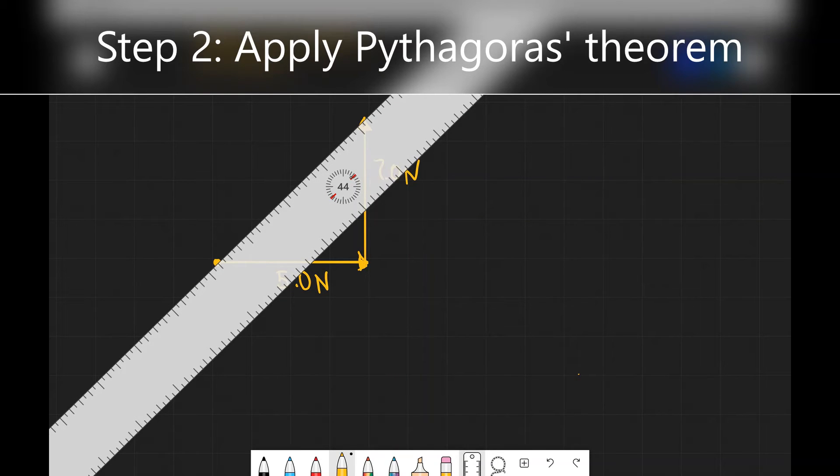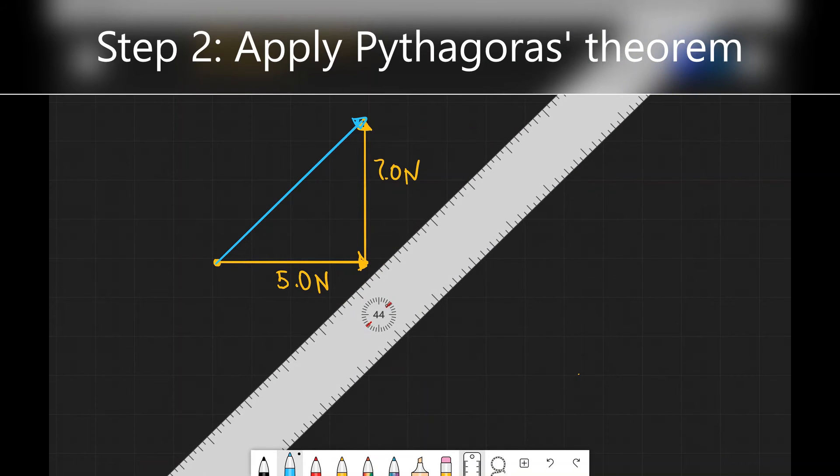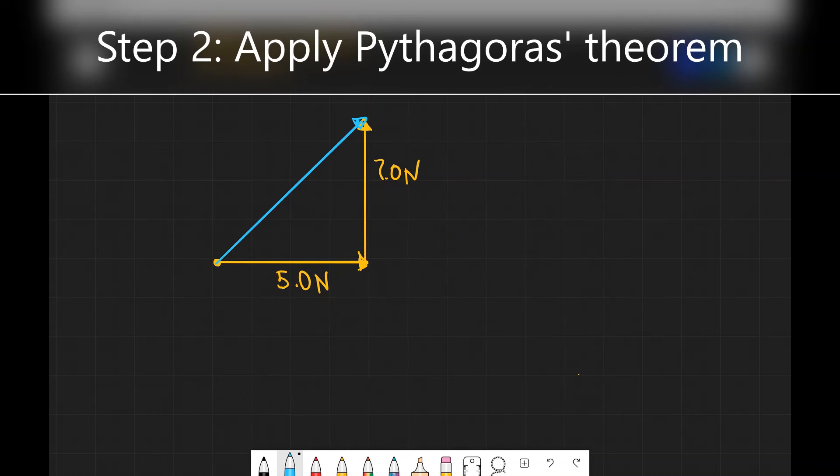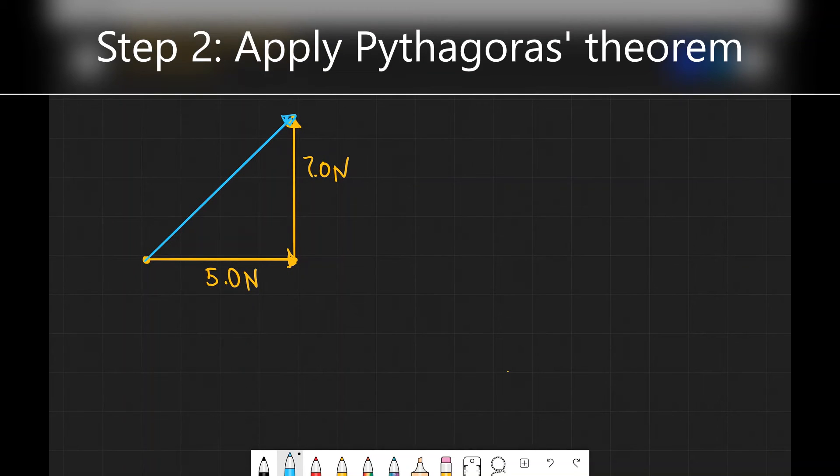Our resultant vector will actually be along this diagonal. See if I can draw this maybe in a different colour over here. So our resultant vector will be along this line across here. We can find the magnitude of this vector by simply applying Pythagoras' theorem. So shall we do that? Let's call this FR, which stands for resultant force in this case. It could be resultant velocity or it could be a multiple of other vector quantities.